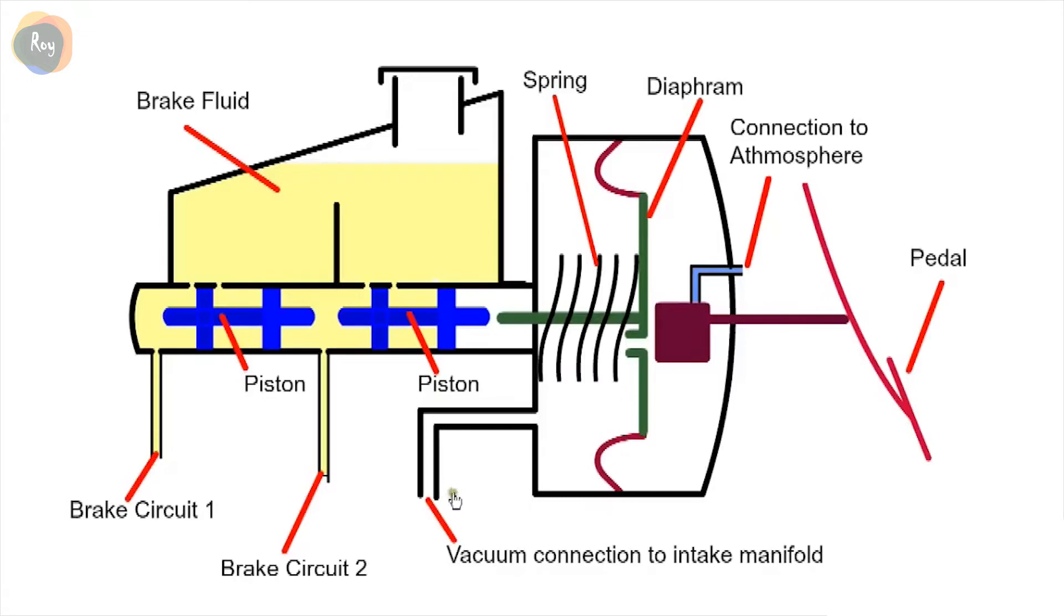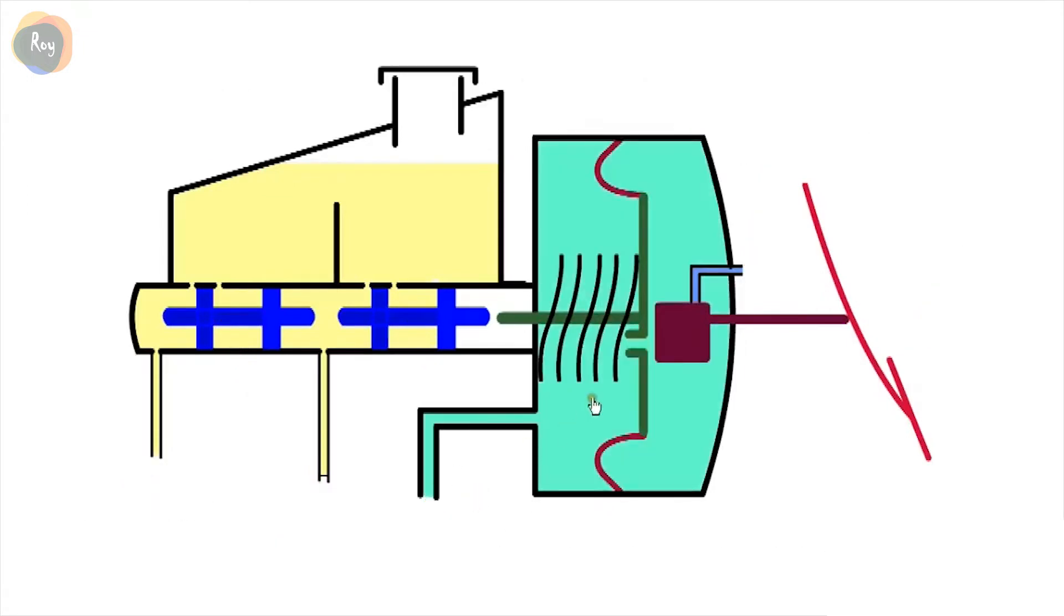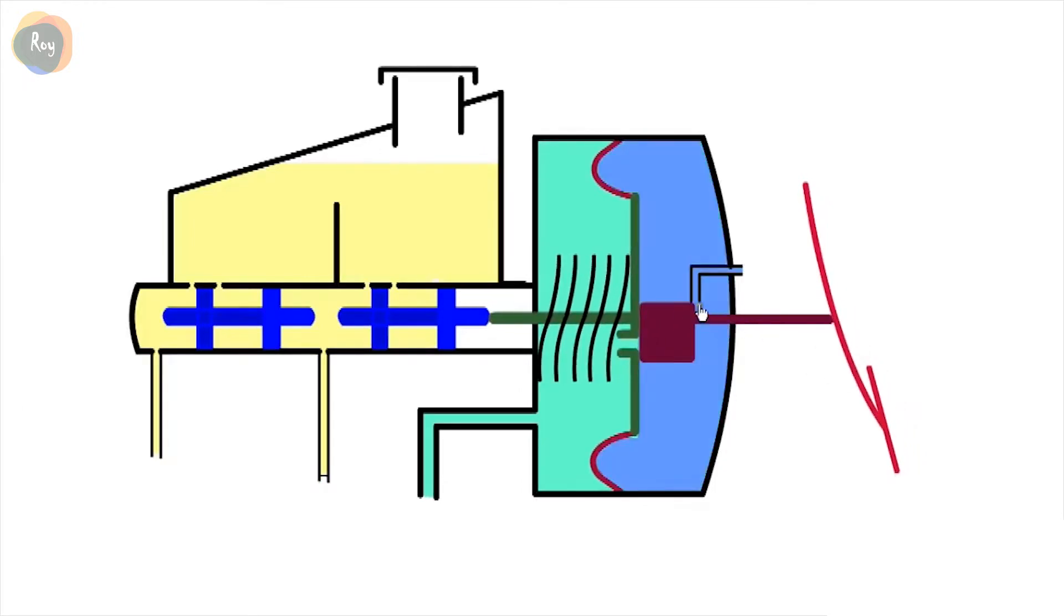When the car is started, there's vacuum on both sides of the diaphragm. When the pedal is pressed, it first closes the valve to the vacuum side and then opens the valve to atmosphere.